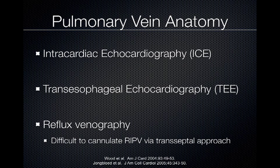Other ways to look at the anatomy include intracardiac echocardiography and transesophageal echocardiography, which is generally performed prior to the procedure at our institution to confirm there is no clot within the left atrial appendage. And reflux venography, which is relatively difficult because you have to reflux contrast against the flow of blood into the pulmonary veins.